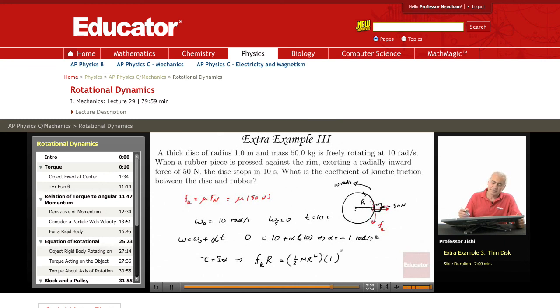So Fk is I alpha. This means that Fk is half mr, and this is mu times 50 newtons. Mu times 50. So mu is half M is 50, and R is 1 divided by 50. So half 50 over 50 is just half. So mu is one half. The coefficient of kinetic friction mu_k is one half.